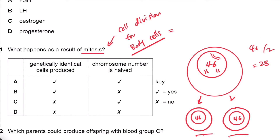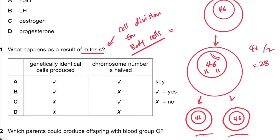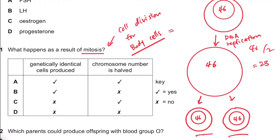This is because the cell that undergoes mitosis first replicates its DNA. It initially had 46 chromosomes, then it goes through DNA replication, meaning it replicates its chromosomes. So the chromosome numbers are doubled, and then when divided in half, each daughter cell gets 46 chromosomes.